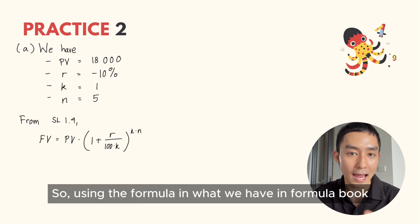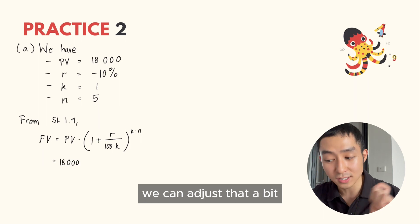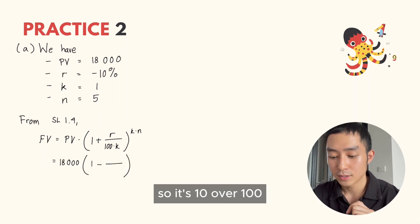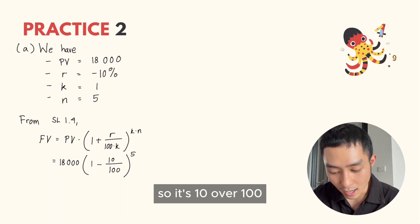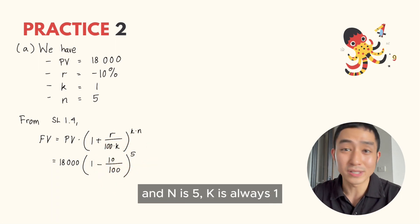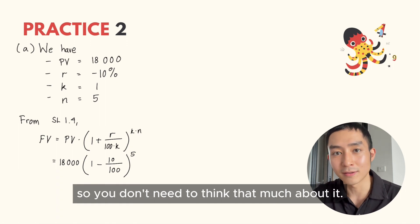Using the formula in what we have in the formula book, we can adjust that a bit. We put that the R is negative, so it's 10 over 100, and N is 5. K is always 1, so you don't need to think that much about it.